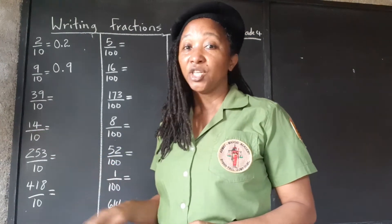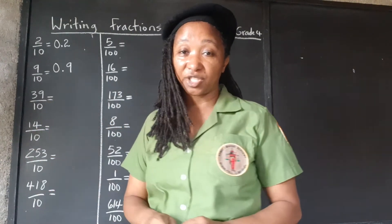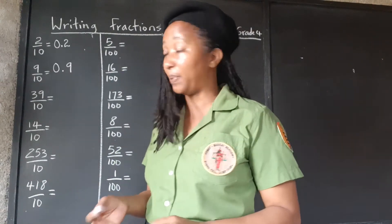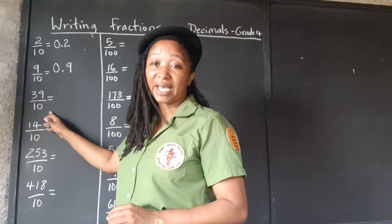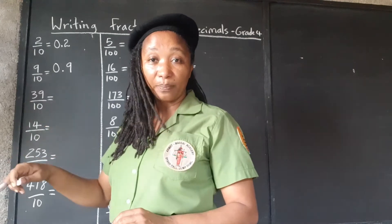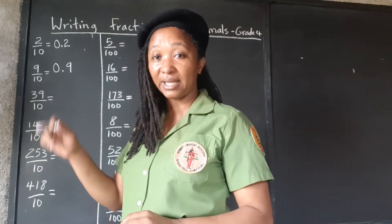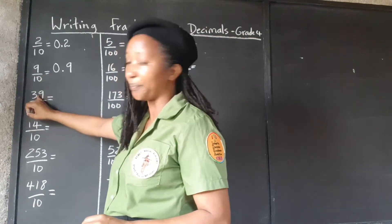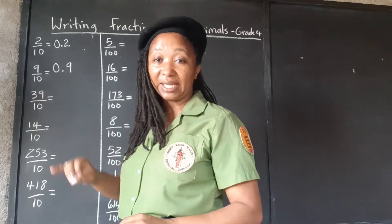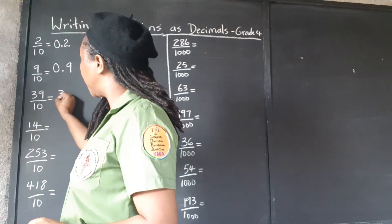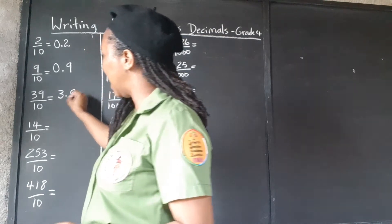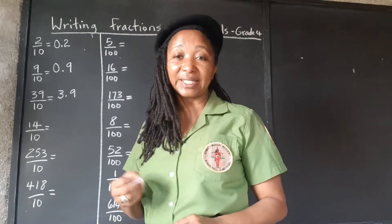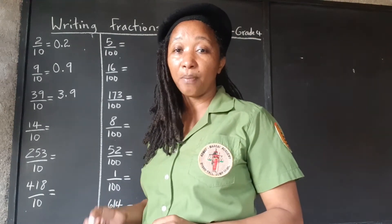39 tenths is actually an improper fraction, which means we're going to end up with a whole number and a decimal part. Since 10 is in the denominator, we're moving one place to the left — that takes us in between the 3 and the 9. So our answer is 3.9. So 39 tenths is the same as 3.9.